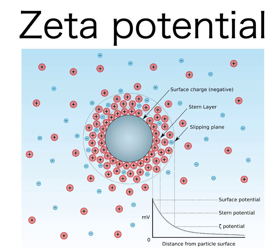Microelectrophoresis has the advantage of yielding an image of the moving particles. On the other hand, it is complicated by electroosmosis at the walls of the sample cell. Electrophoretic light scattering is based on dynamic light scattering. It allows measurement in an open cell, which eliminates the problem of electroosmotic flow except for the case of a capillary cell, and it can be used to characterize very small particles, but at the price of the lost ability to display images of moving particles. Tunable resistive pulse sensing (TRPS) is an impedance-based measurement technique that measures the zeta potential of individual particles based on the duration of the resistive pulse signal. The translocation duration of nanoparticles is measured as a function of voltage and applied pressure, from the inverse translocation time versus voltage-dependent electrophoretic mobility, and thus zeta potentials are calculated.